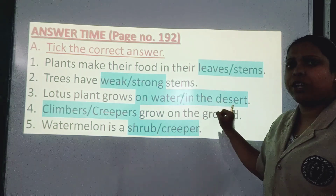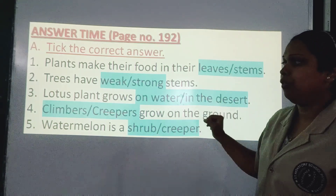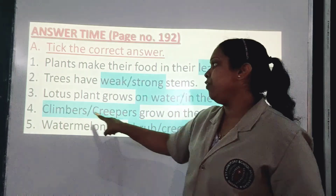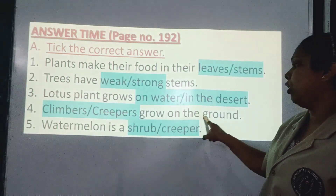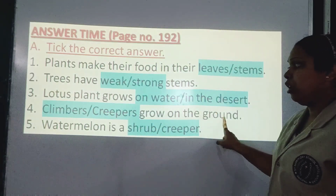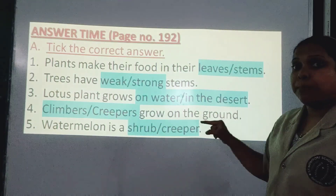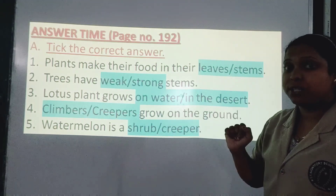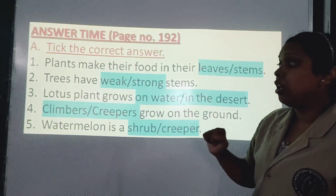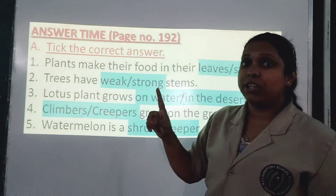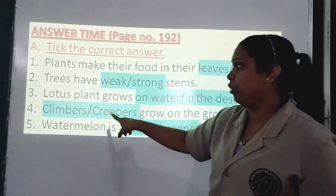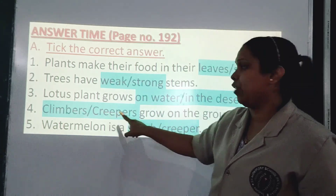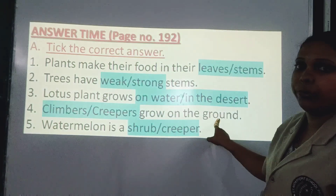And which plant grows in the desert? Cactus. Number 4: Climbers or creepers grow on the ground. Climbers climb up, so creeper is the correct answer. Creepers grow on the ground.